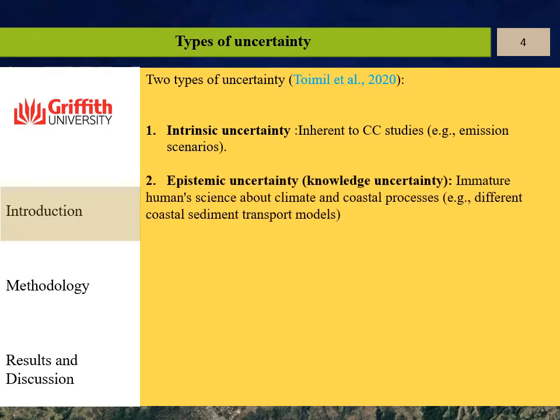The other type of uncertainty is epistemic uncertainty, which is related to our limited knowledge about climate and coastal processes. For example, we have different coastal sediment transport models.